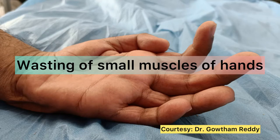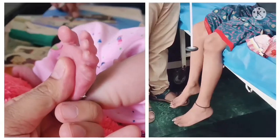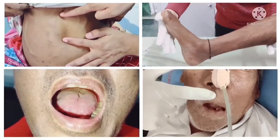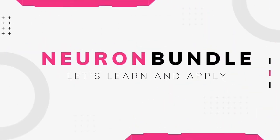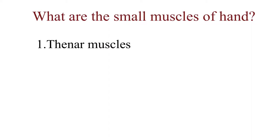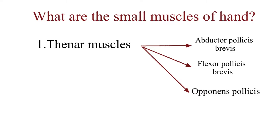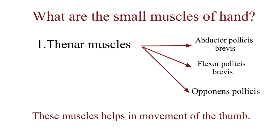Hello friends, today we will talk about examination of small muscles of the hand. Let us enumerate the small muscles of the hand. Thenar muscles comprise of abductor and flexor pollicis brevis and opponens pollicis. These help in the movement of the thumb.